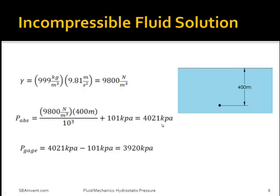To solve for gauge pressure, you can either solve for just the depth-dependent part of the equation, or if you've already solved for absolute pressure, subtract the atmospheric pressure from the absolute pressure, which gives a gauge pressure of 3920 kilopascals.